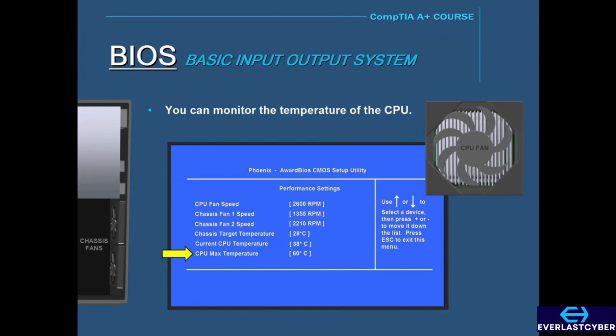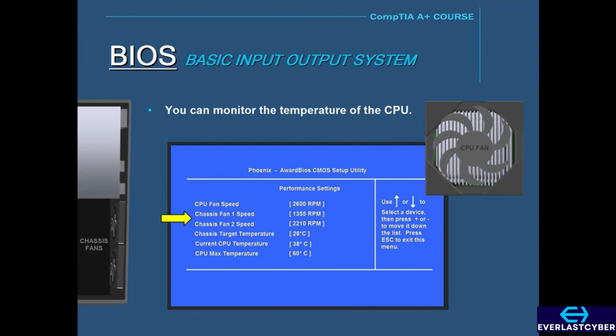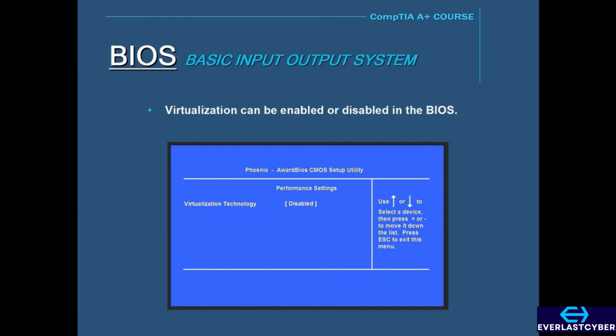In the BIOS, you can also modify the fan speeds of the computer and enable or disable virtualization. Virtualization is a technology that enables your computer to run multiple operating systems in different partitions. The operating systems are not actual, but they are virtual. So if your computer is preventing you from installing or running virtualization software, it could be that virtualization is disabled in the BIOS.